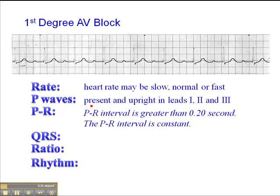Looking at this particular rhythm, the beginning of the P wave falls right on a dark line. We have 0.20 second here, and the QRS begins about there. So this PR interval is actually about 0.20, 0.24, 0.28 — almost 0.32 second. That's quite prolonged. You'll notice that the PR interval is consistently prolonged throughout — it doesn't change throughout the entire process. That's a first degree AV block.